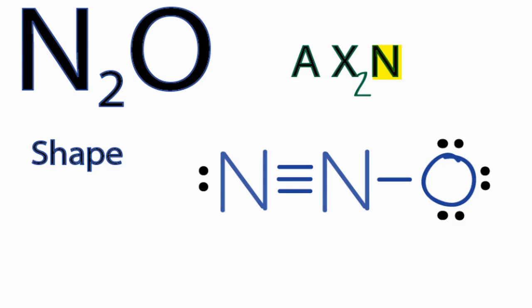And N, that's the number of non-bonding electron pairs on the central nitrogen there. And there aren't any, so we can just ignore that. That leaves us with AX2.